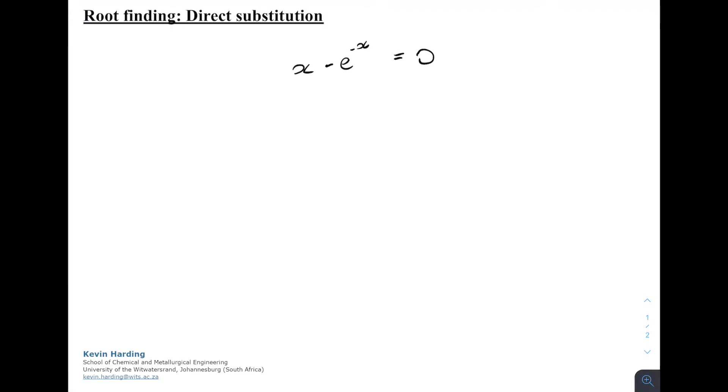So the root finding method, the direct substitution method rather, what we need for this to work is that we have to have one x on the left. So we always have to have one x left with no powers, and then have everything else on the right-hand side, but it must still have an x on the right-hand side. So this equation will then become x equals e to the minus x.